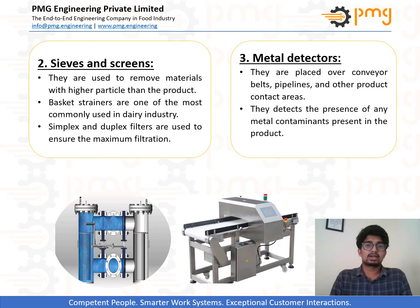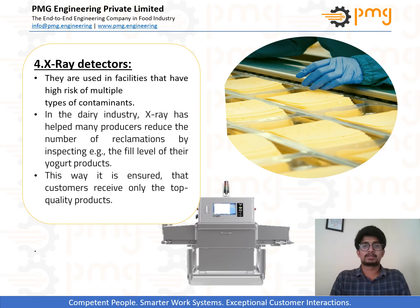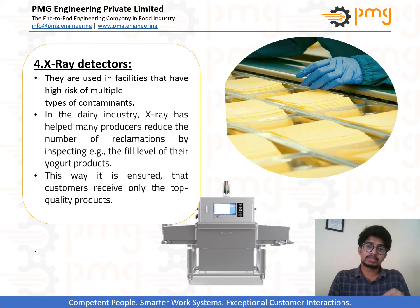Next come metal detectors, which are placed over conveyor belts in food production lines to identify metal contaminants. X-ray detectors are used for inspecting multiple contaminants — they are also placed across conveying belts and identify any foreign material using X-ray vision technology.